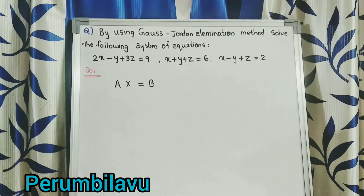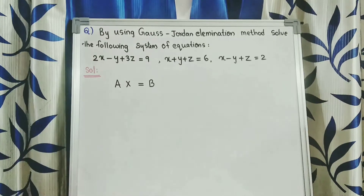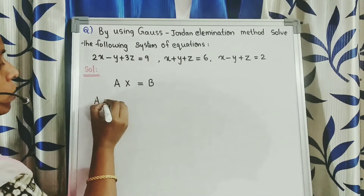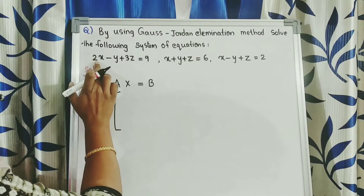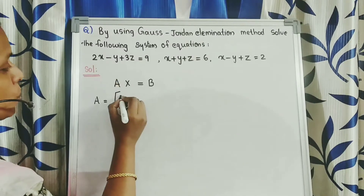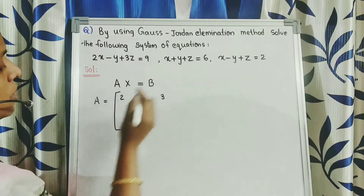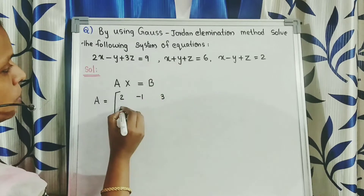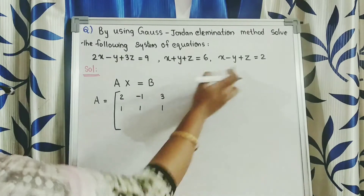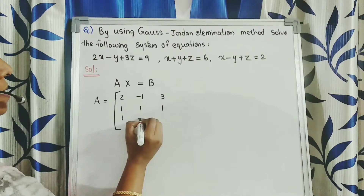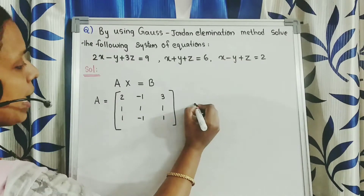First we express the system of equations into AX equal to B form. Here A equals the matrix of coefficients of the variables. The coefficient of X is 2, Y is minus 1, Z is 3. In the second equation the coefficient of X is 1, Y is 1, Z is 1. In the third equation the coefficient of X is 1, Y is minus 1, Z is 1.